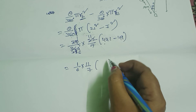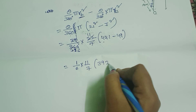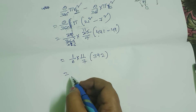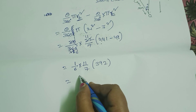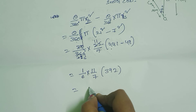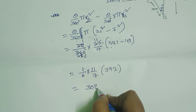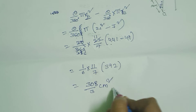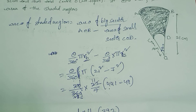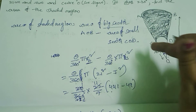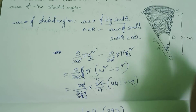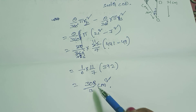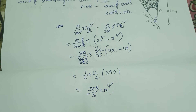392 minus 49 = 392. Which equals (1/6) × (11/7) × 441 − 49 = 392. Finally we get 308/3 cm². Therefore, area of shaded region ACDB equals 308/3 cm².